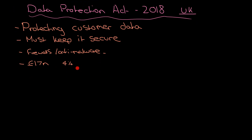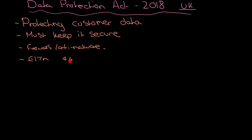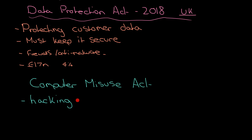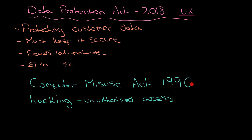Let's move on to the Computer Misuse Act. The Data Protection Act is all about protecting customer data. The Computer Misuse Act is about what happens if you misuse computers. If you decide to try and gain access to a network or a computer that you should not have access to, then you are hacking, and you can be prosecuted personally under the Computer Misuse Act. Prosecuted means the country can take you to court, resulting in fines and potentially imprisonment.